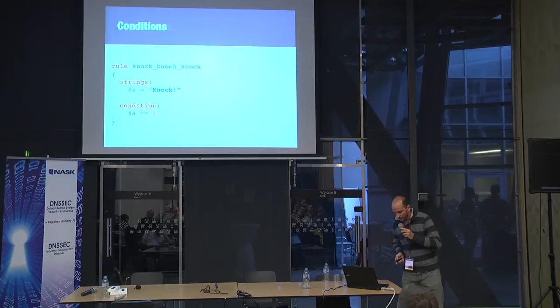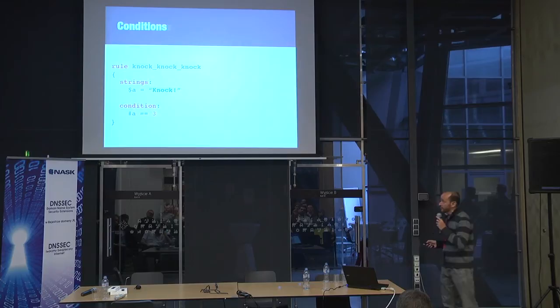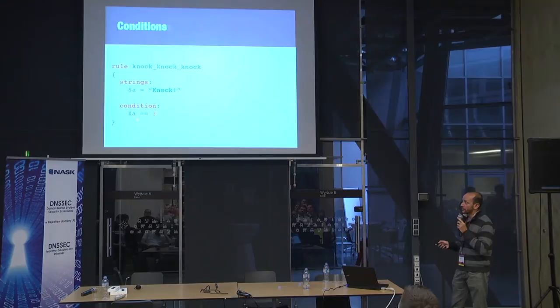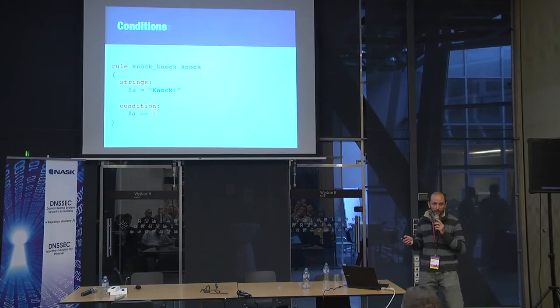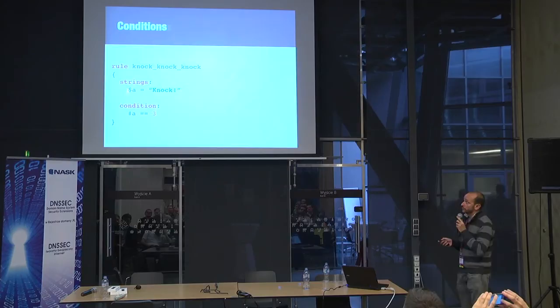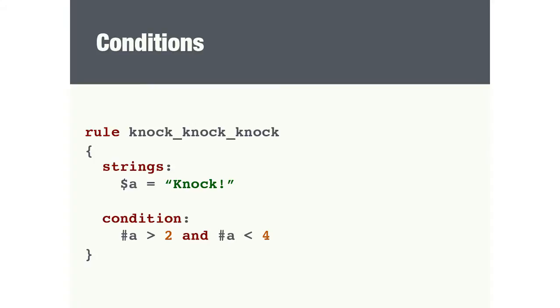Sometimes you need to create rules based not only on the presence of a string in the file, but also on the number of times that string appears. That's done by using the number sign (#) in front of the string identifier instead of the dollar sign. This represents the number of times the string appeared in the file. For example, this condition says you want string A to appear exactly three times in the file. You can also use operators like greater than or less than — YARA supports most comparison operators.